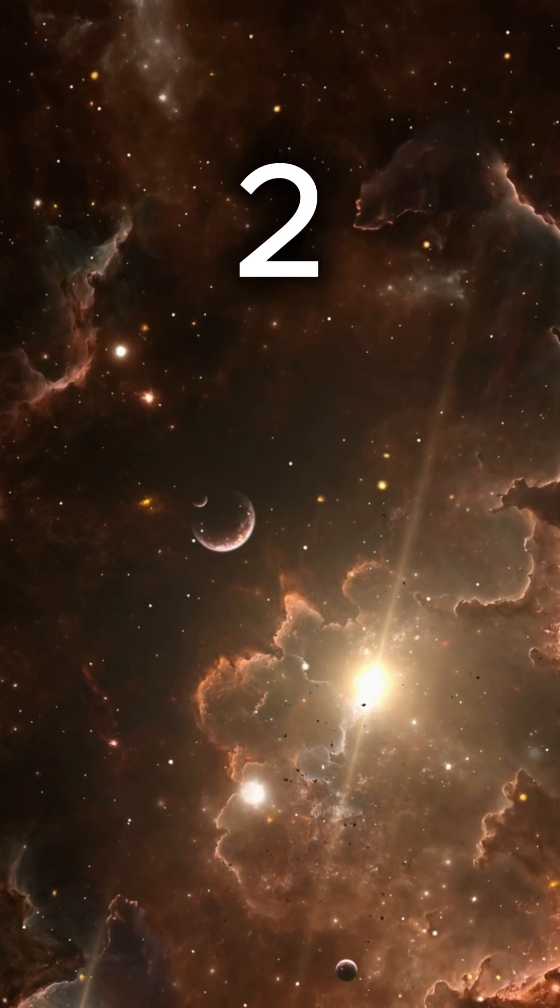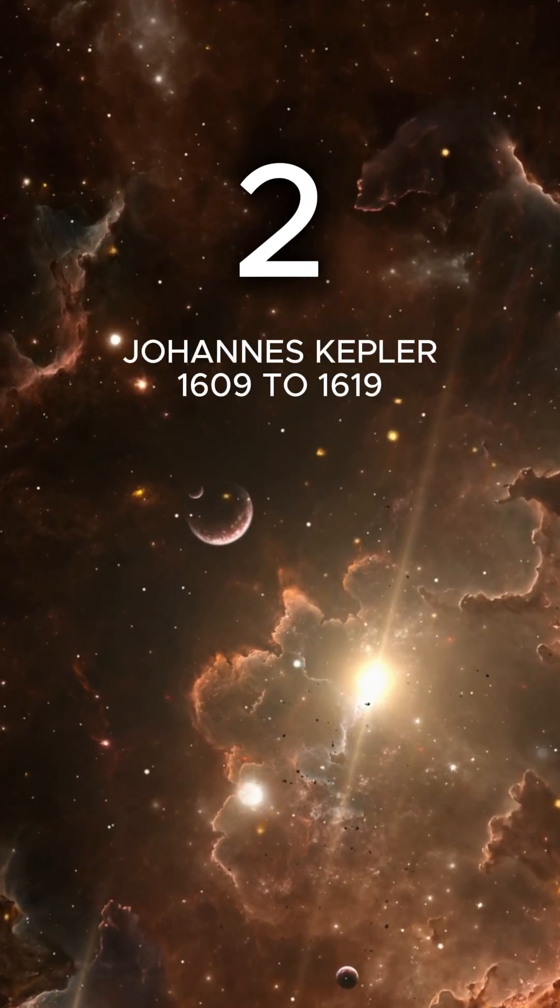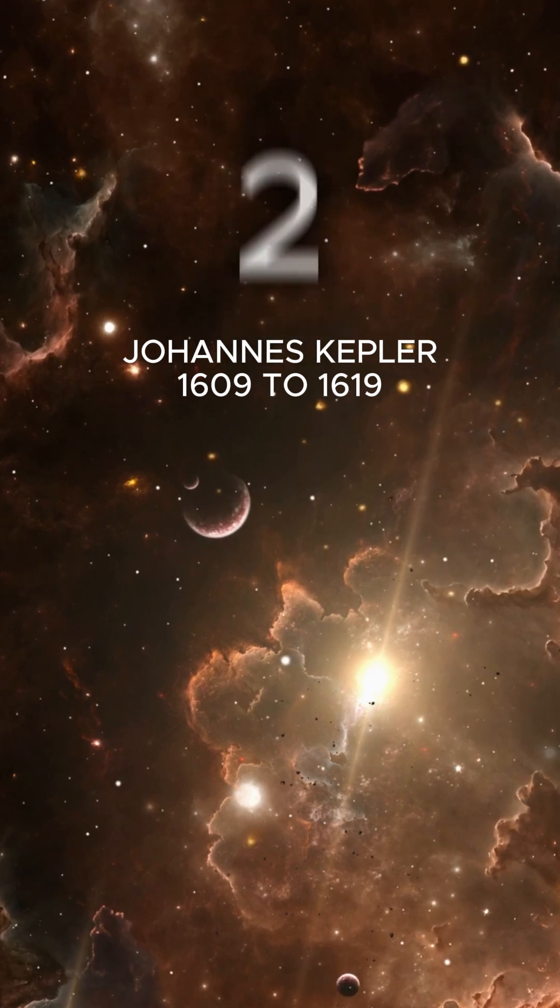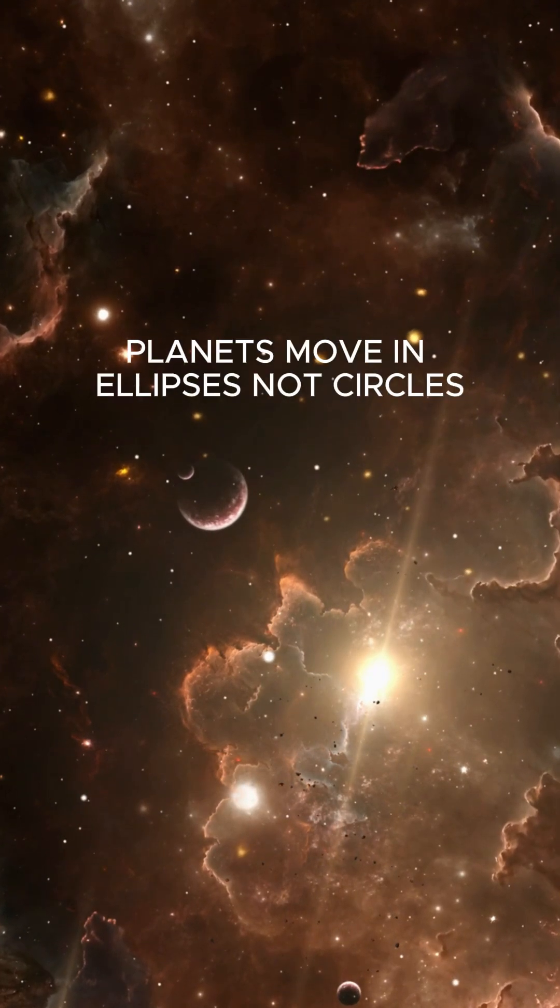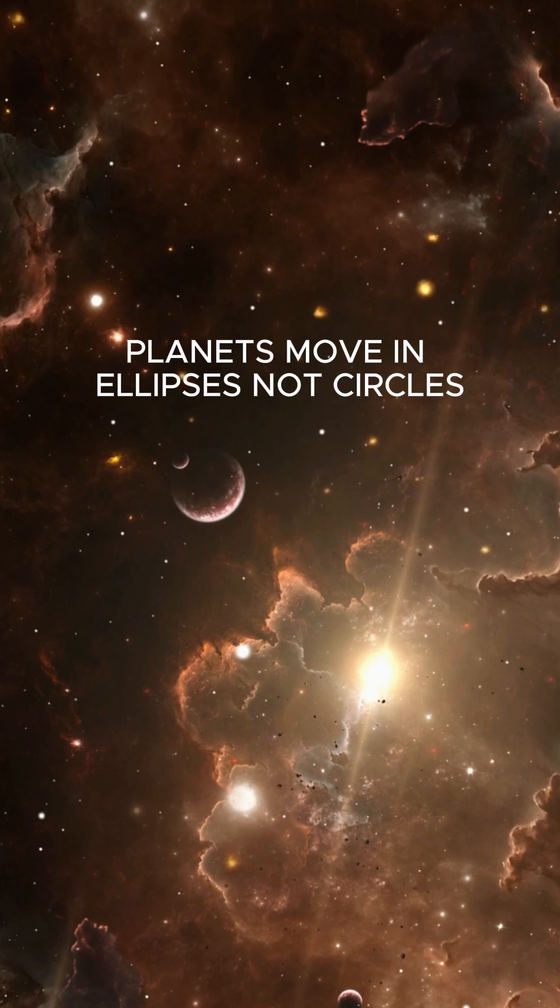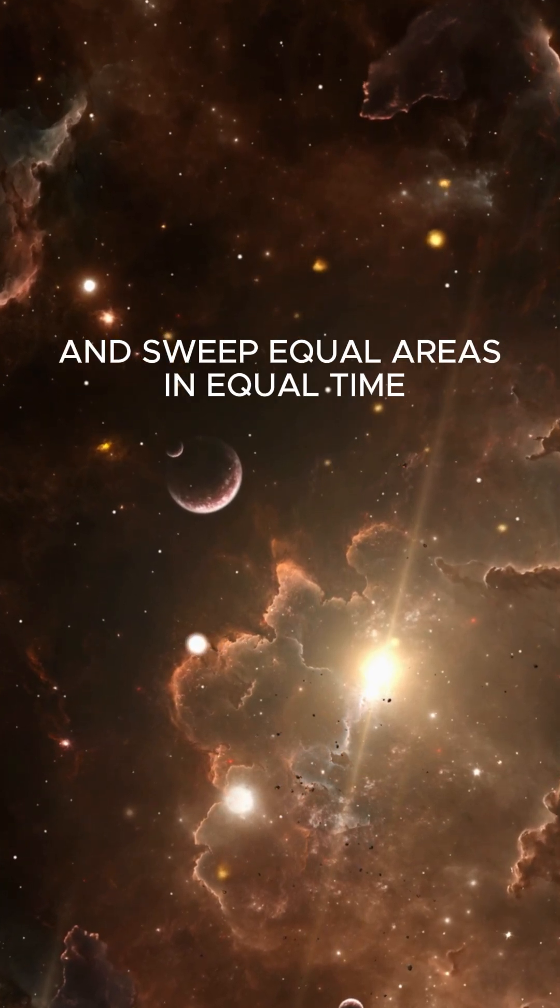The Laws of Planetary Motion, Johannes Kepler, 1609-1619. Discovery: Planets move in ellipses, not circles, and sweep equal areas in equal time.